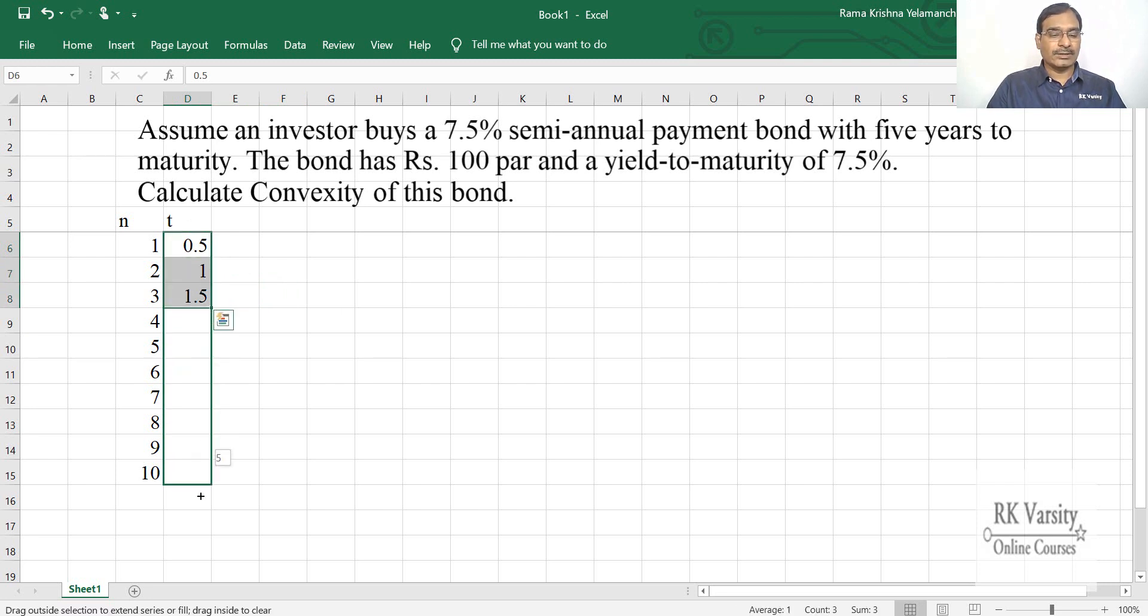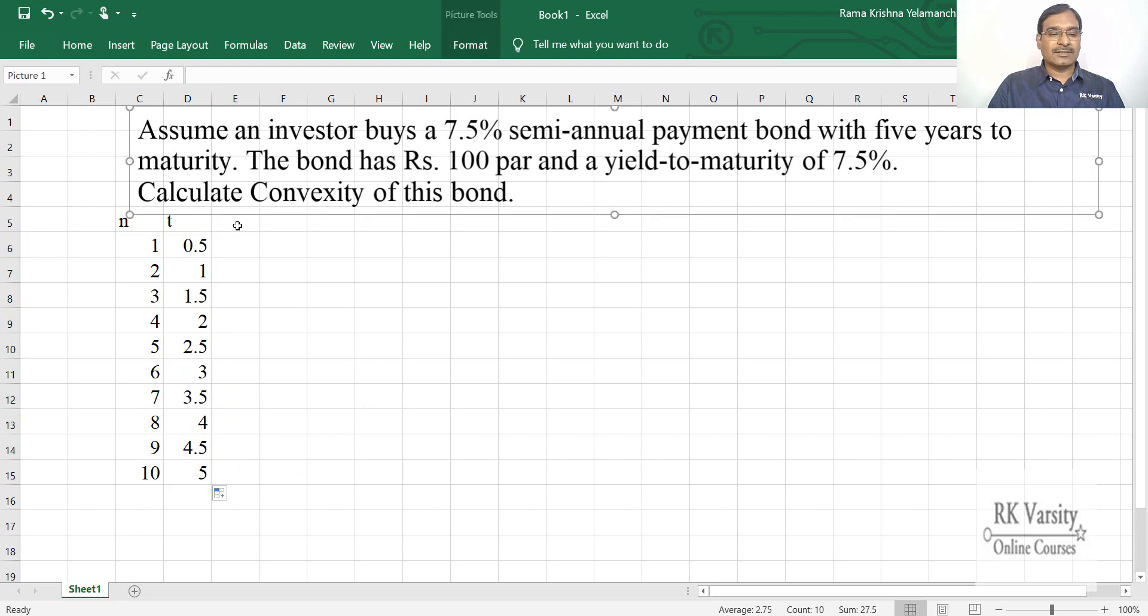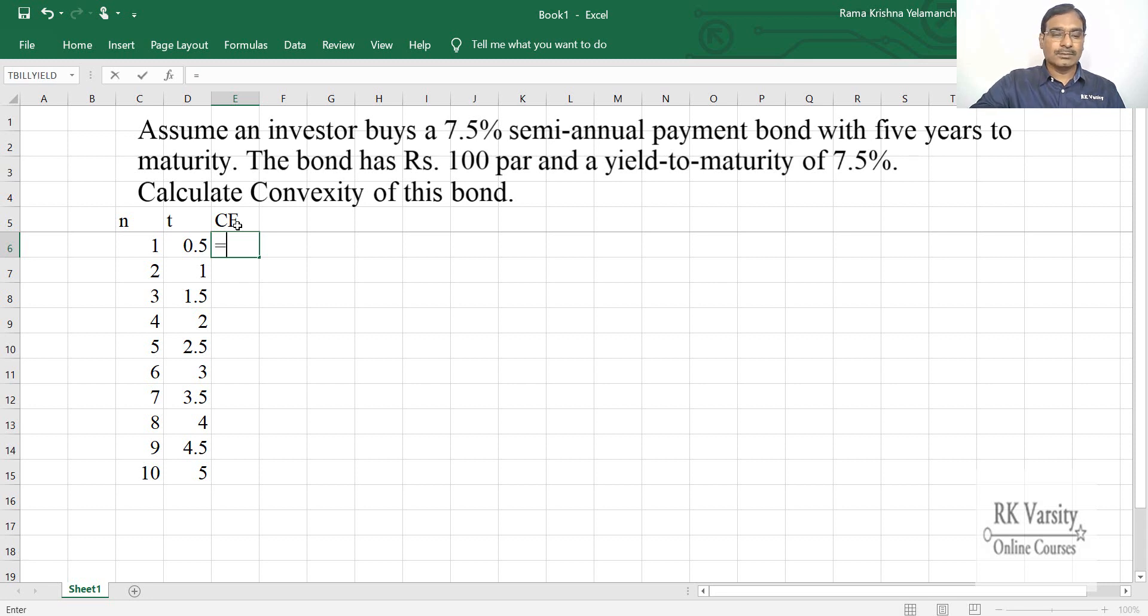Then the cash flow, that is the coupon amount. Your cash flows are, this equals to par value is 100 times 0.075 upon 2. Rs.3.75 is the coupon that you receive in the first coupon period. We will do this for till 9 coupon payments and in the 10th coupon payment, that is at the end of the fifth year, you will receive par value of 100 plus coupon of 3.75. So this is 103.75 Rs.